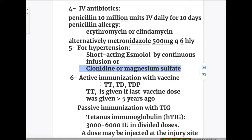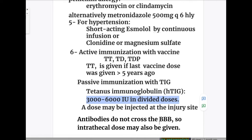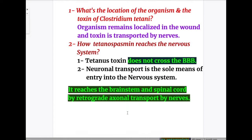Number six, immunization — active or passive. Active immunization is done with vaccine: tetanus toxoid (TT), tetanus-diphtheria, or TDaP. Tetanus toxoid is given if the last vaccine dose was given more than 5 or more than 10 years ago. Passive immunization is done with human tetanus immunoglobulin at a dose of 3,000 to 6,000 international units in divided doses; a dose may be injected at or around the site of injury. Since antibodies do not cross the blood-brain barrier, an intrathecal dose may also be given.